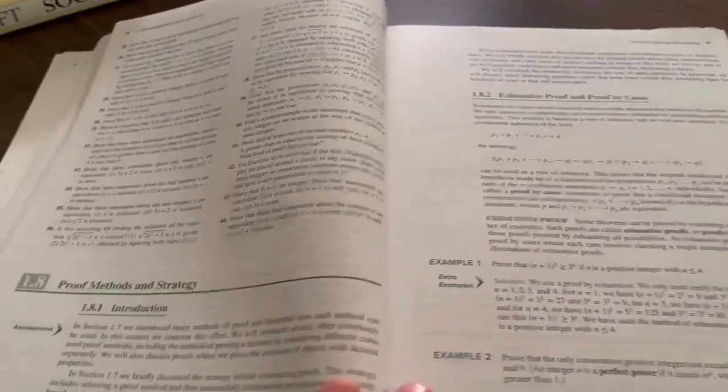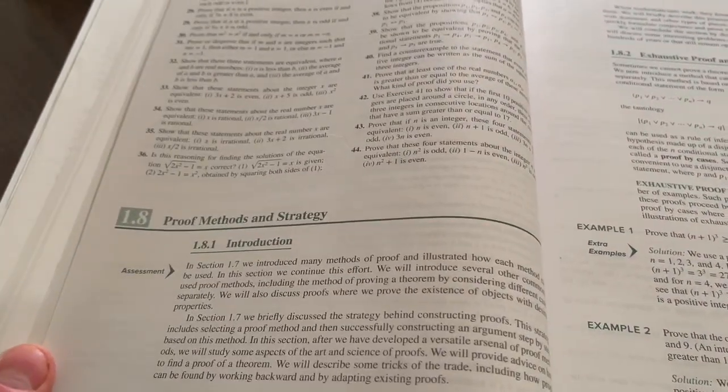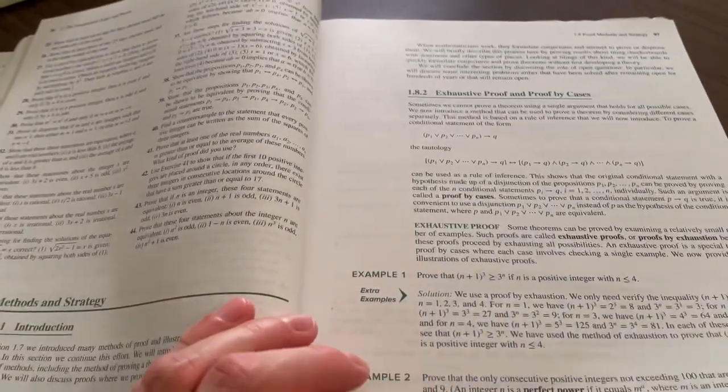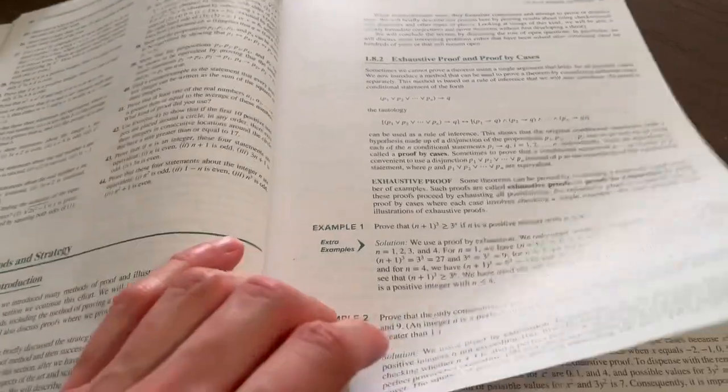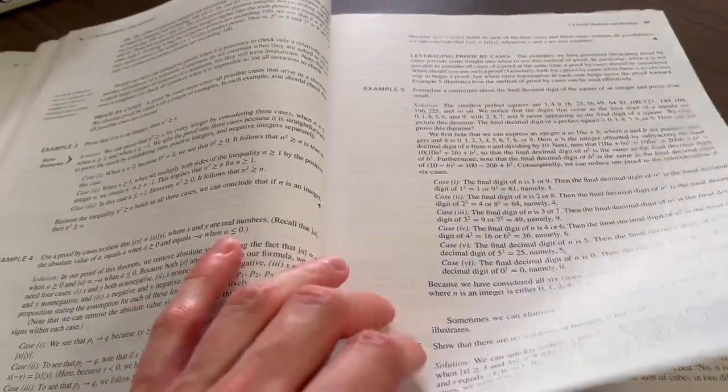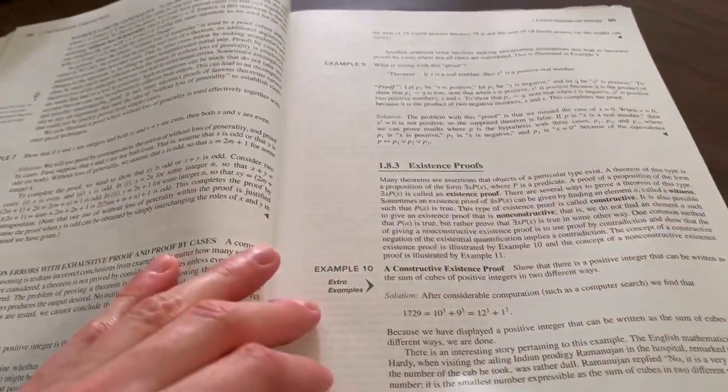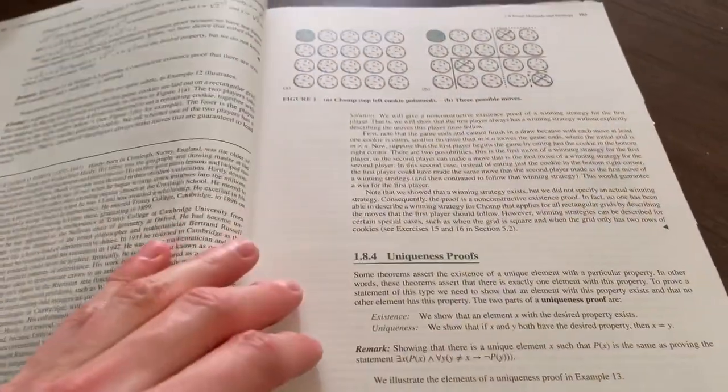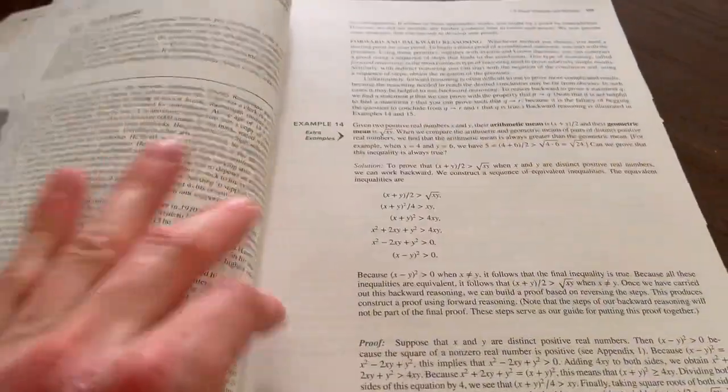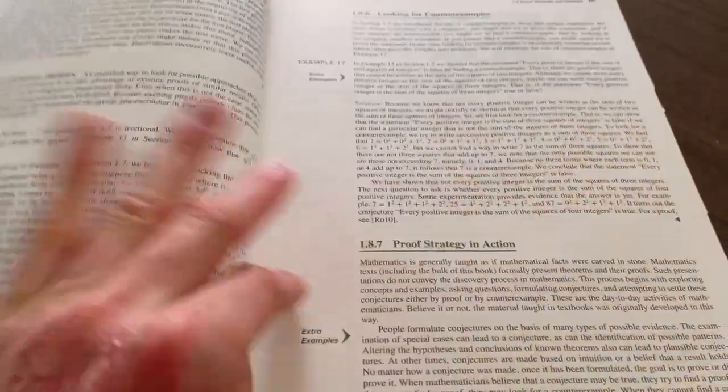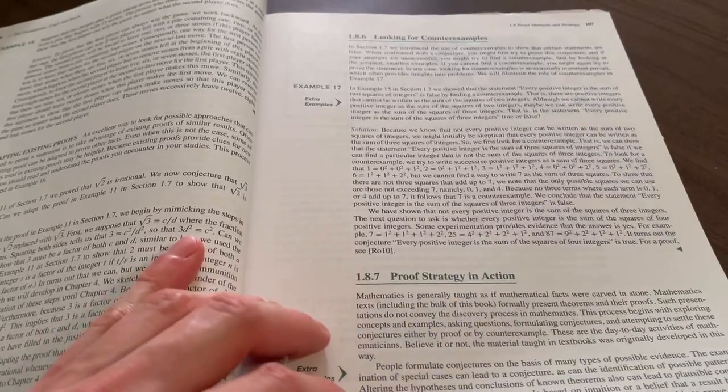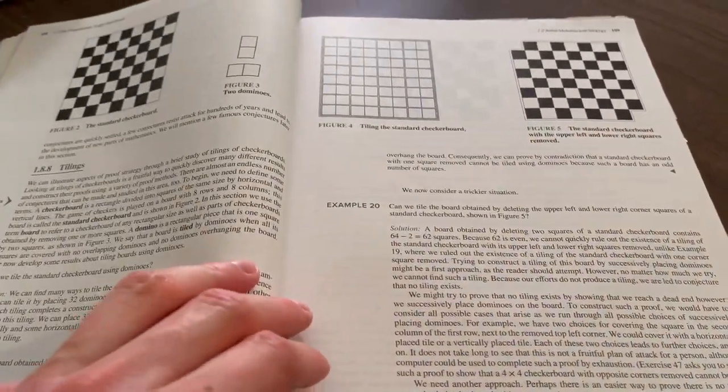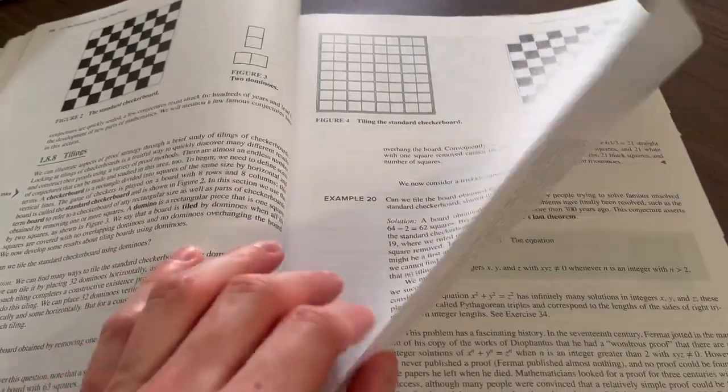And I think that's it. Oh, one more section here. Proof, methods, and strategy. Exhaustive proof and proof by cases. We can think about existence proofs. Uniqueness proofs. Looking for counterexamples. Proof, strategy, and action. And we have some cool puzzle applications.